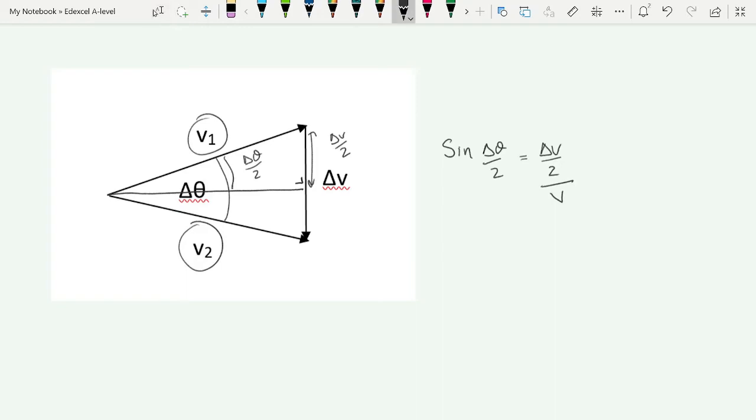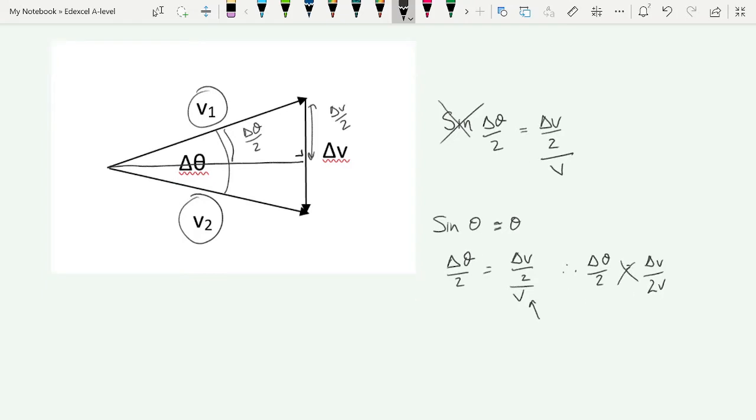And the small angle approximation says that sine theta is approximately equal to theta, which effectively means we can get rid of the sine and rewrite this equation as delta theta over 2 is equal to delta V over 2 divided by V. And of course we're going to get rid of this awkward part in the second part of this equation and say delta theta over 2 then is equal to delta V over 2V. If we cross multiply that, then we get 2 delta V is equal to 2 V delta theta. And of course our 2's will cancel, leaving us with delta V is equal to V delta theta.